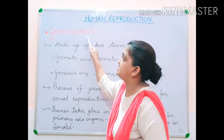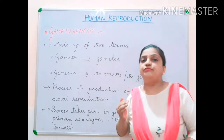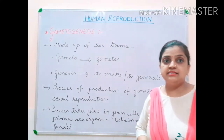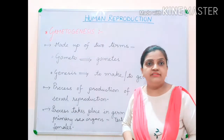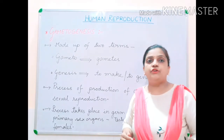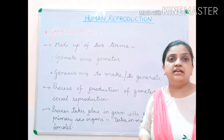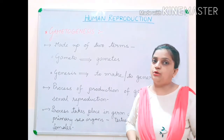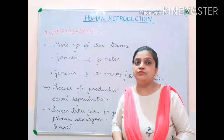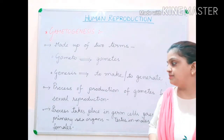Formation of gametes for sexual reproduction is called gametogenesis, and it is a specific feature among living organisms. Until the process of formation of gametes takes place, fertilization or the next generation will not occur. That is why gametogenesis is one of the specific features of the sexual reproduction process.